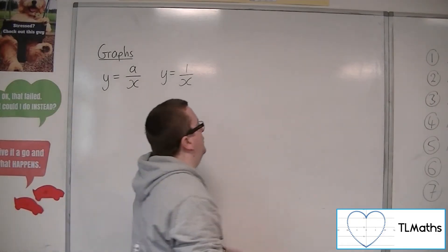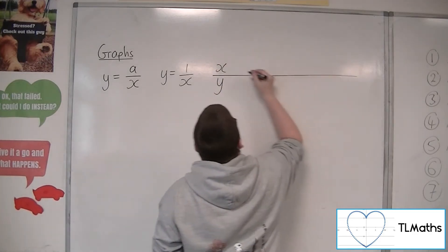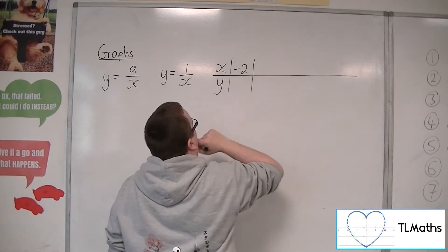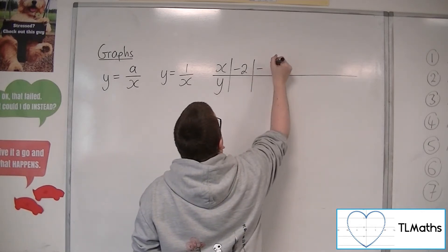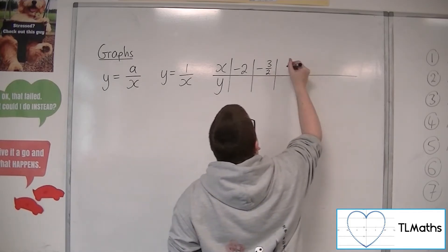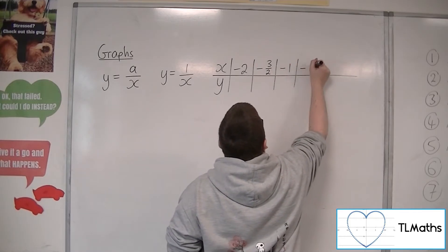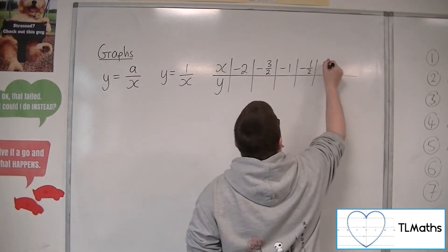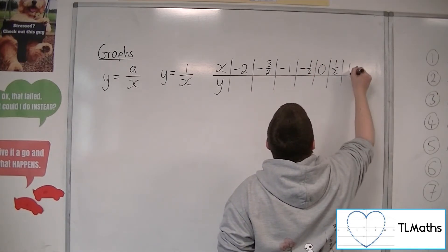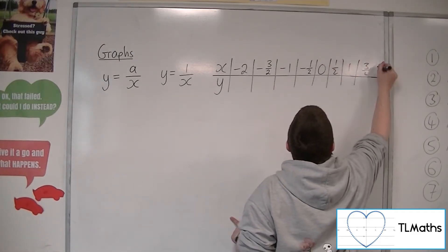Let's start with x equals minus 2, then minus 3 halves, then minus 1, then minus a half, then 0, then a half, 1, 3 halves, and 2.